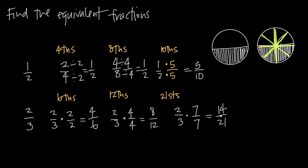We can do this with our other examples too. To reduce fourteen over twenty-one to lowest terms, we look for the greatest common factor between fourteen and twenty-one. Both are divisible by seven: fourteen divided by seven is two, and twenty-one divided by seven is three. We get back to two thirds, and since there's no common factor between two and three other than one, we know the fraction is in lowest terms — reduced as much as possible.